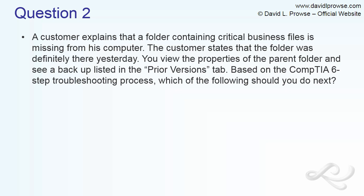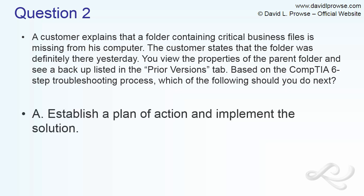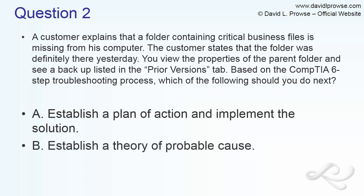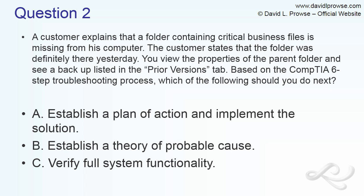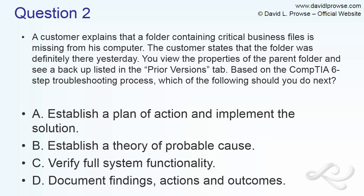This long scenario-based question breaks down to the CompTIA six-step troubleshooting process — you need to know this for the field and the exam. The possible answers are: A, establish a plan of action and implement the solution — that sounds premature; B, establish a theory of probable cause — that looks good; C, verify full system functionality — also premature; and D, document findings, actions, and outcomes — that's the last step of the troubleshooting process.